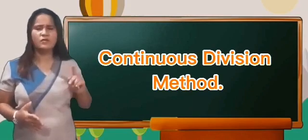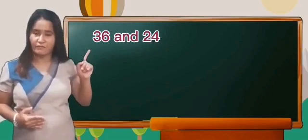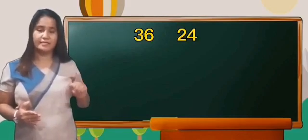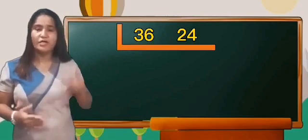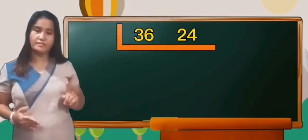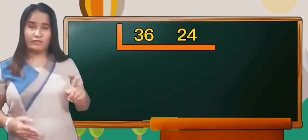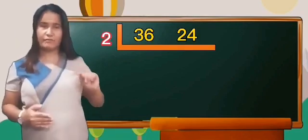Now, let's look at the numbers 36 and 24. We can use a division sign like this. After that, we are going to find the smallest prime number that is divisible by 36 and 24. That number is 2.